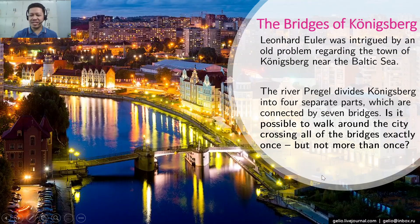The Bridges of Königsberg. Leonard Euler was intrigued by an old problem regarding the town of Königsberg near the Baltic Sea. The River Pregel divides Königsberg into four separate parts which are connected by seven bridges. The question is: is it possible to walk around the city crossing all of the bridges exactly once, but not more than once?